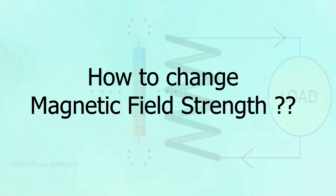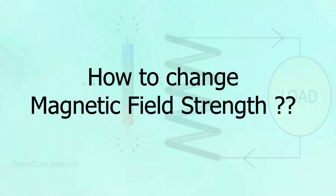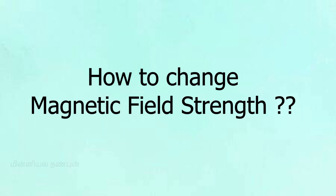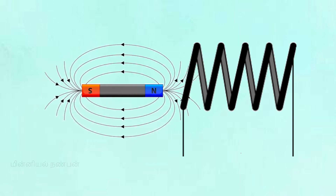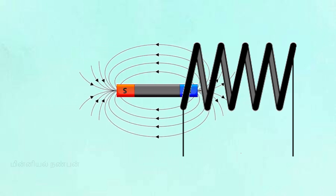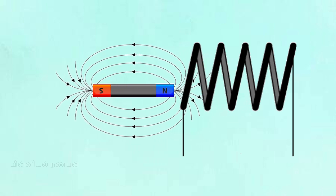How do you change the magnetic field in a coil? When the magnetic field constantly changes, an EMF is induced. If the magnetic field changes, there are three methods. The first method is by moving a magnet toward or away from the coil. Moving the magnet changes the magnetic flux through the coil, and that change induces an EMF.